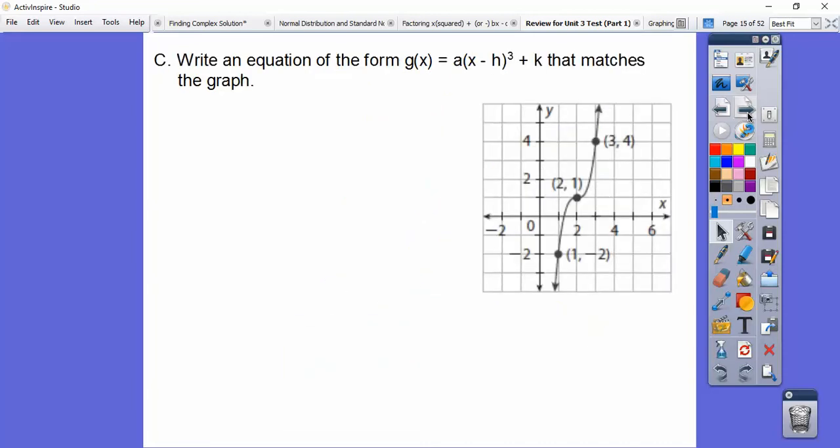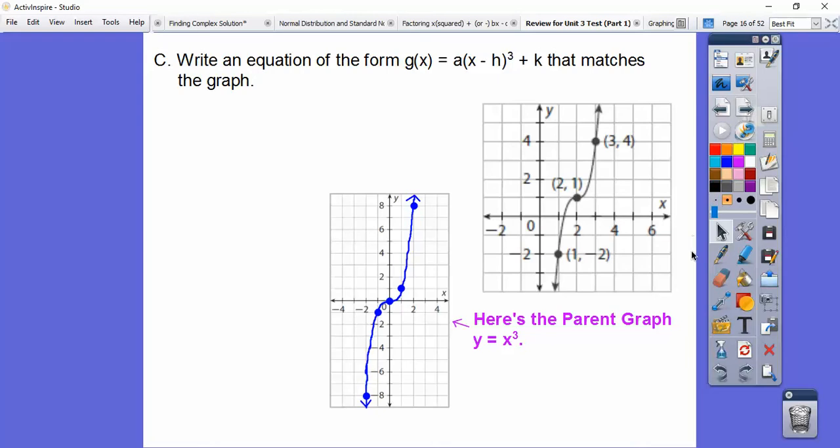Write the equation of the form g(x) = a(x - h)³ + k that matches the graph. Here's the parent graph. We did this in module 5-3. The parent graph goes over 1, up 1, over 2, up 8, because 2 to the 3rd is 8, and then over 1, down 1, so because negative 1 to the 3rd is negative 1, negative 2 to the 3rd is negative 8. So here's our parent graph.